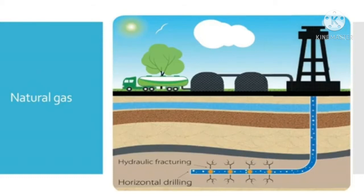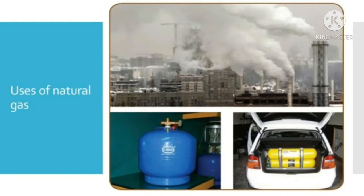Natural gas is used as an industrial and domestic fuel. It is used in thermal power stations. It is used as fuel in vehicles as an alternative for petrol and diesel. When heated, it decomposes and forms hydrogen and carbon. Hydrogen thus formed is used in the manufacture of fertilizers. It is used to manufacture chemicals, fabrics, glass, steel, plastics and paints. It is also used in electricity generation.